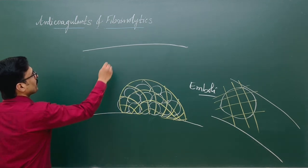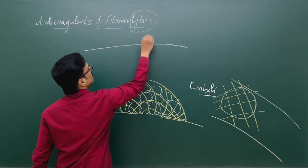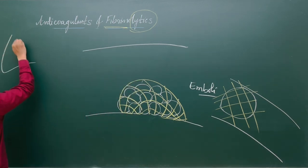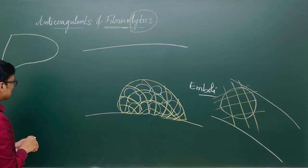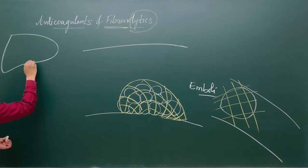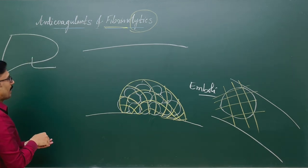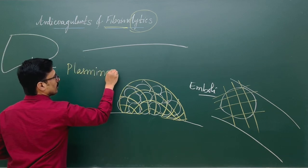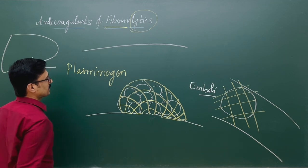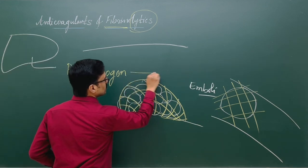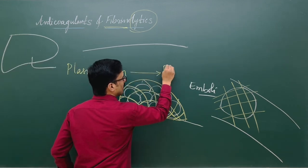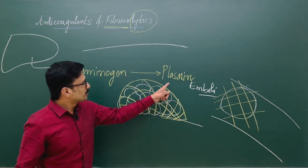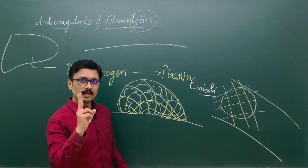So what is the mechanism to break down the clot? Fibrinolytic — 'lytic' refers to lysis, breakdown of fibrin. The liver synthesizes and secretes a protein called plasminogen. This plasminogen has to be converted to its active form, plasmin. The role of plasmin is to break down the fibrins.